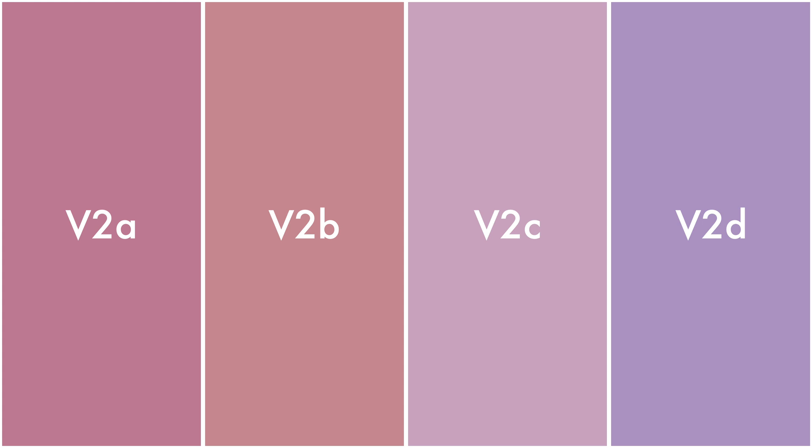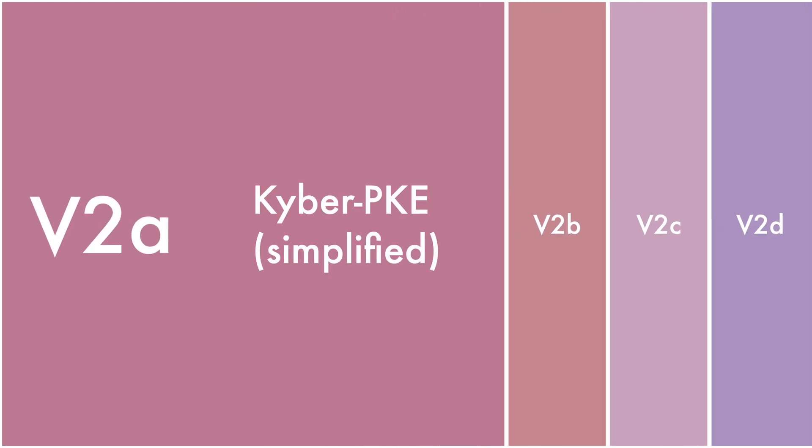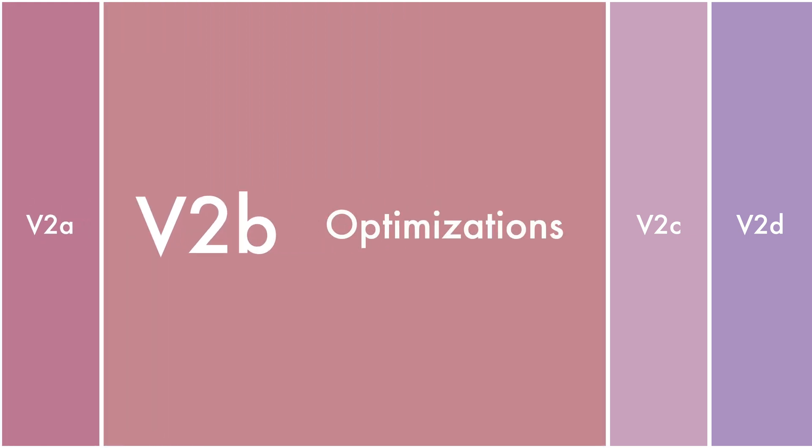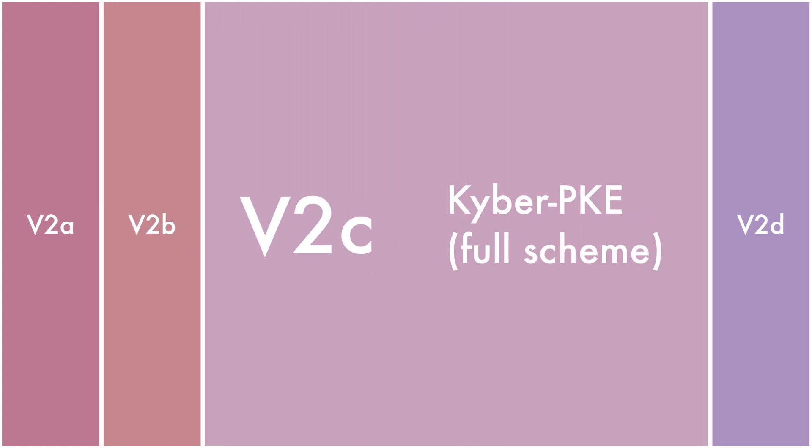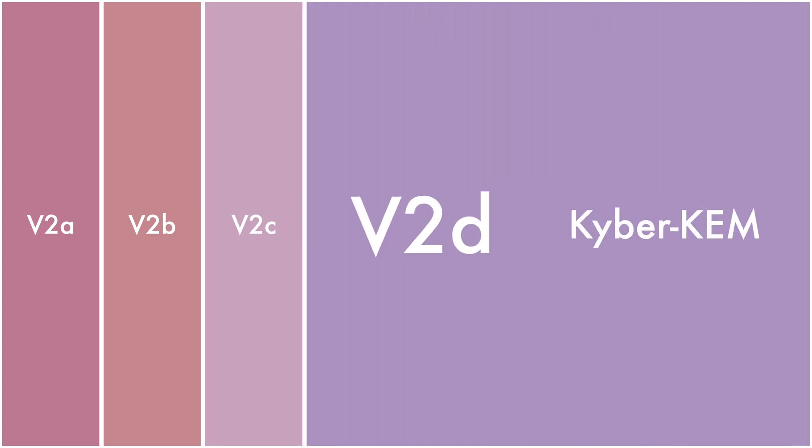Chapter 2 is comprised of four video lectures. V2A presents a simplified version of the Kyber public key encryption scheme. V2B will introduce several optimizations of the simplified scheme. The full Kyber public key encryption scheme that incorporates these optimizations is presented in V2C. Lastly, V2D presents the Kyber Chem.